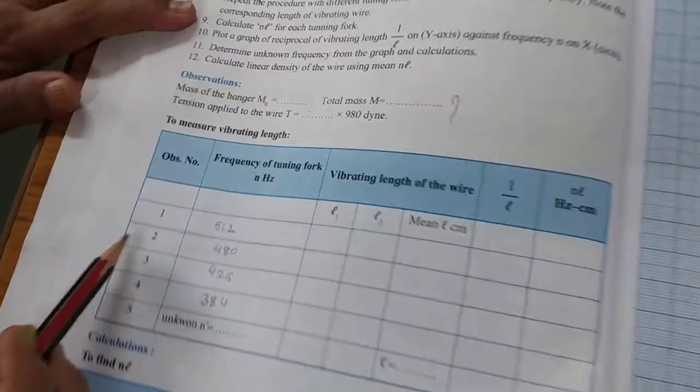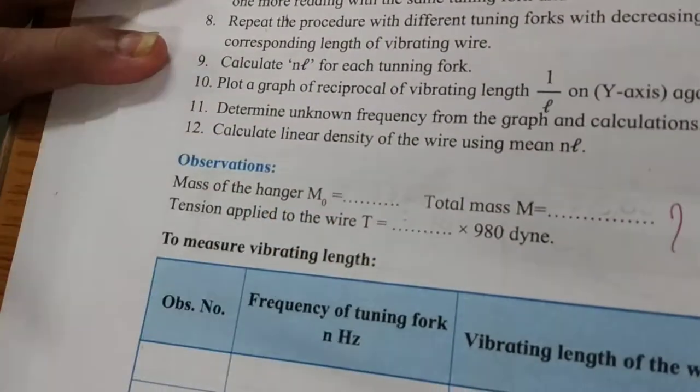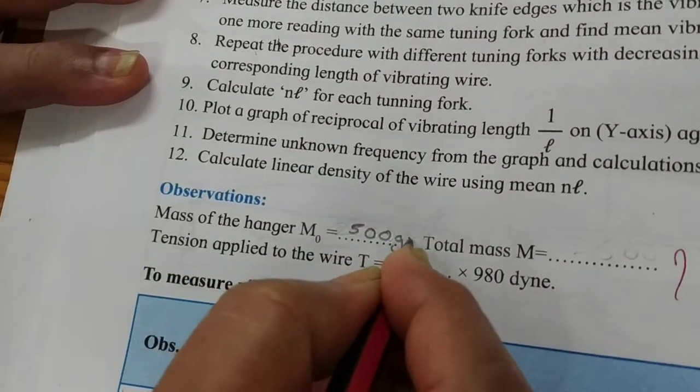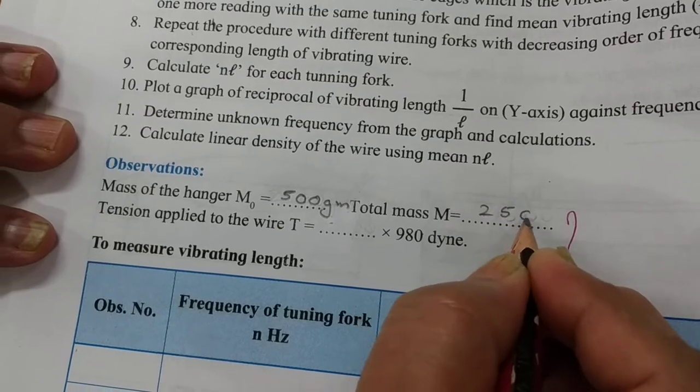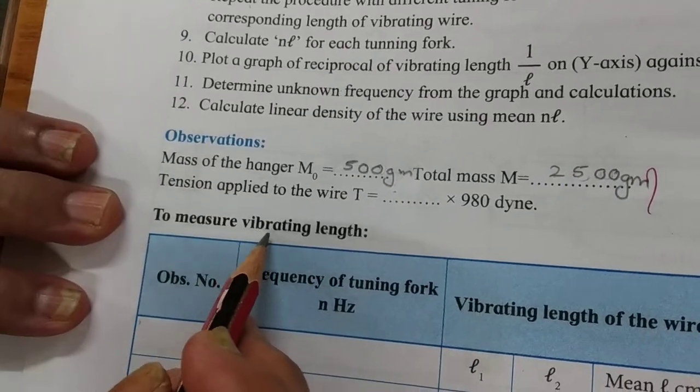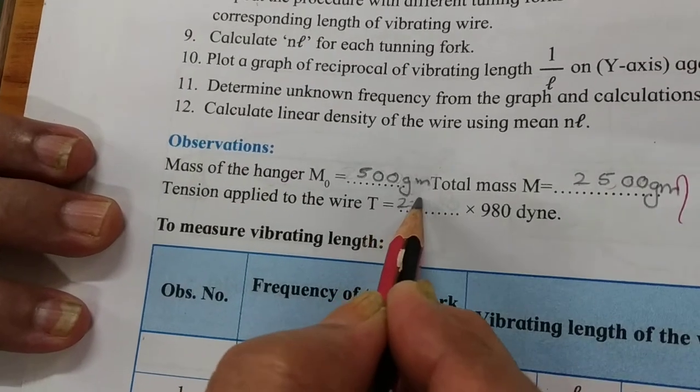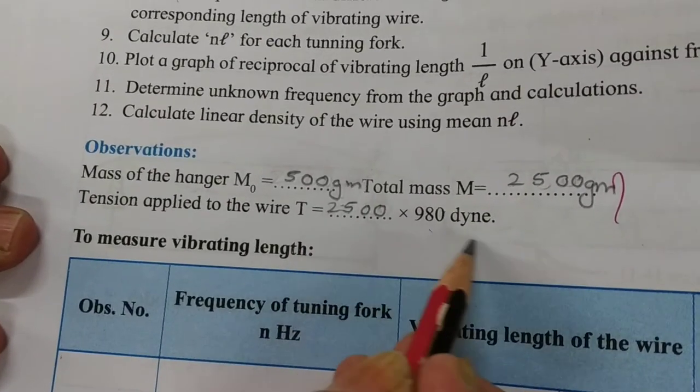This is our observation table. The total mass of the hanger is 500 grams. Total mass is equal to 2500 grams. Tension applied to the wire is 2500 grams into 980 times.